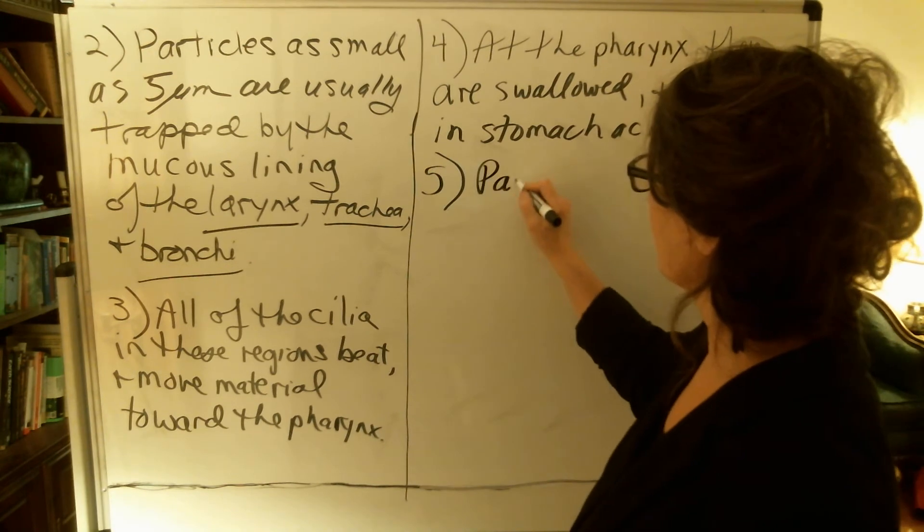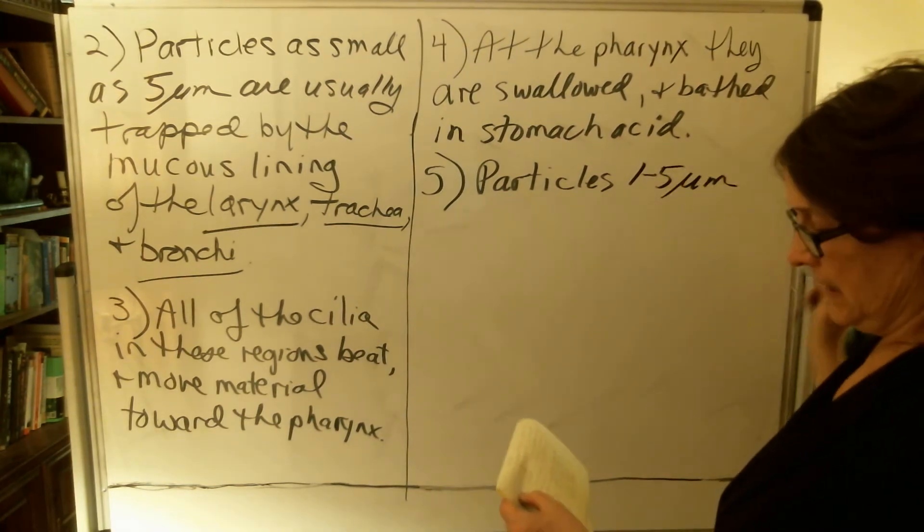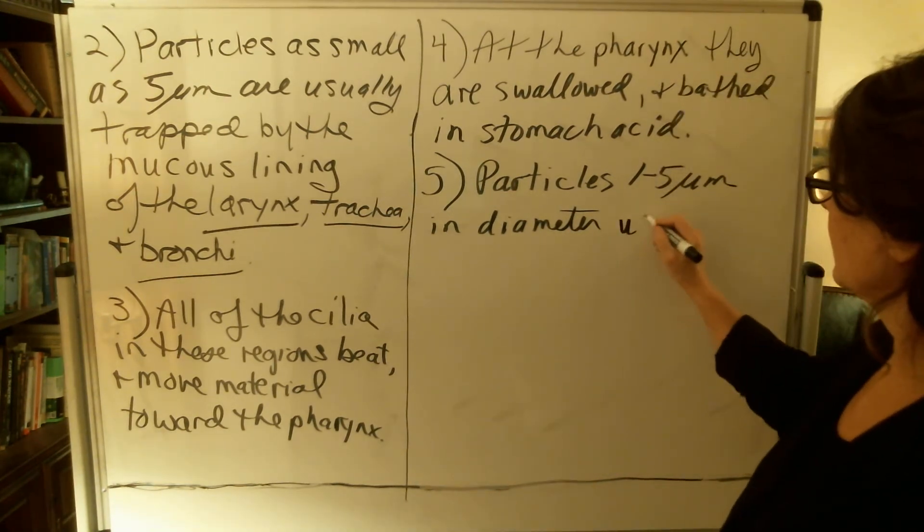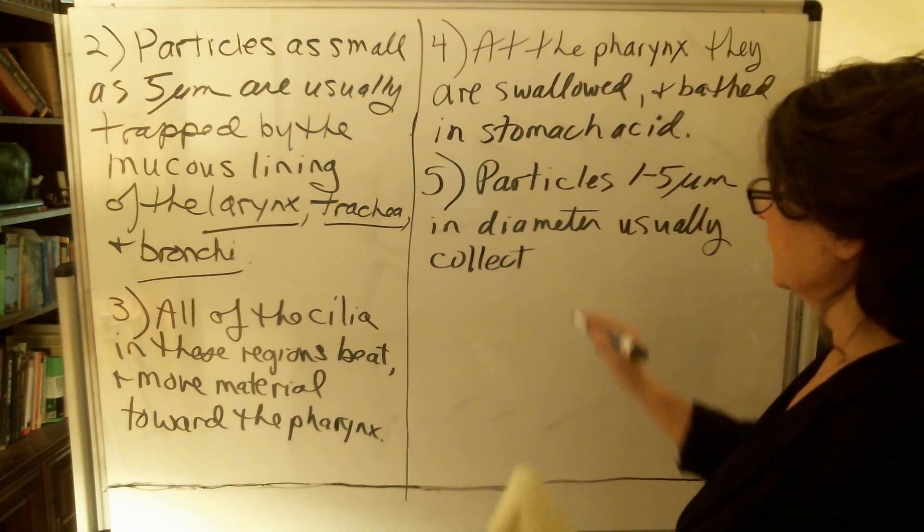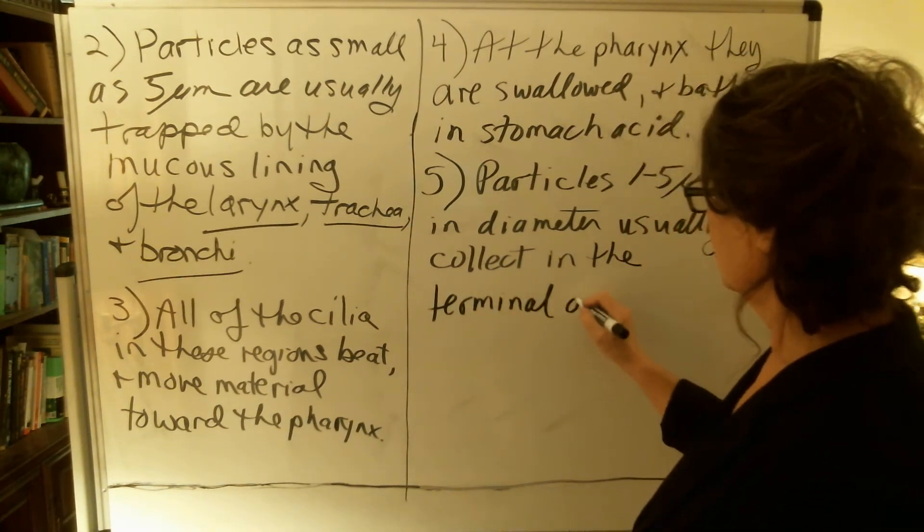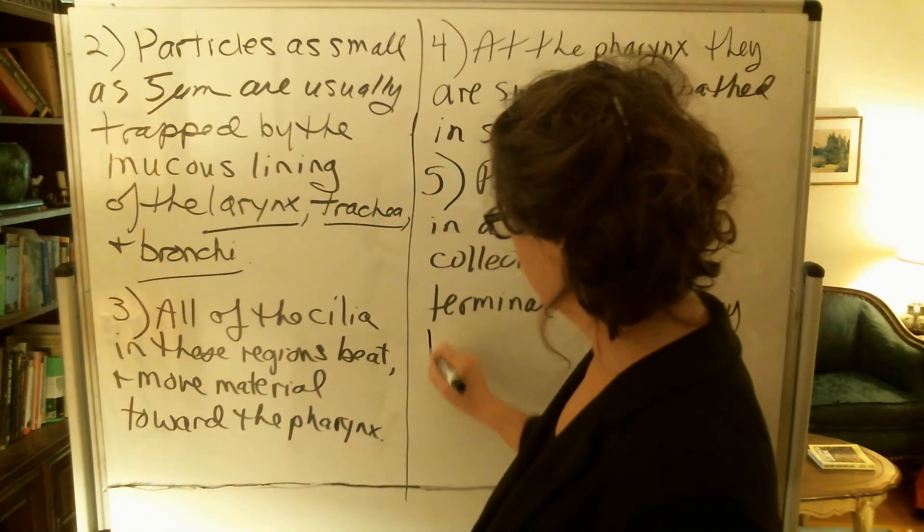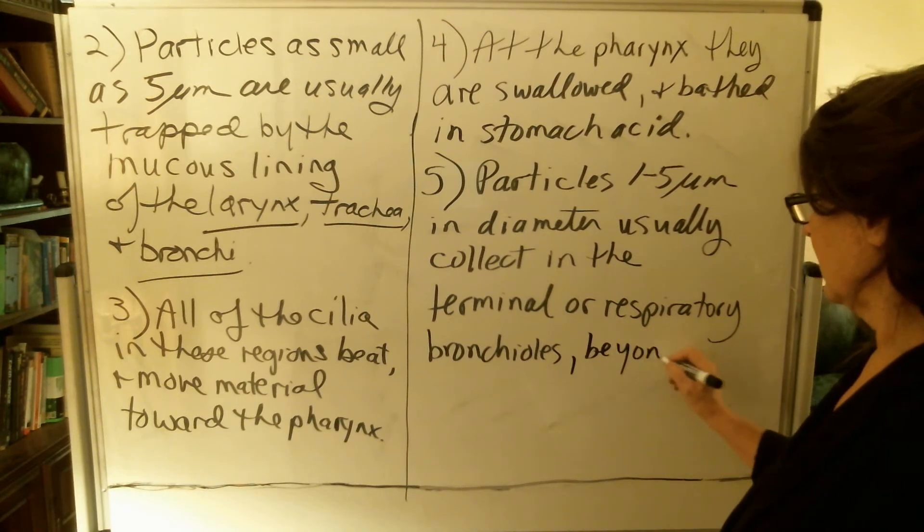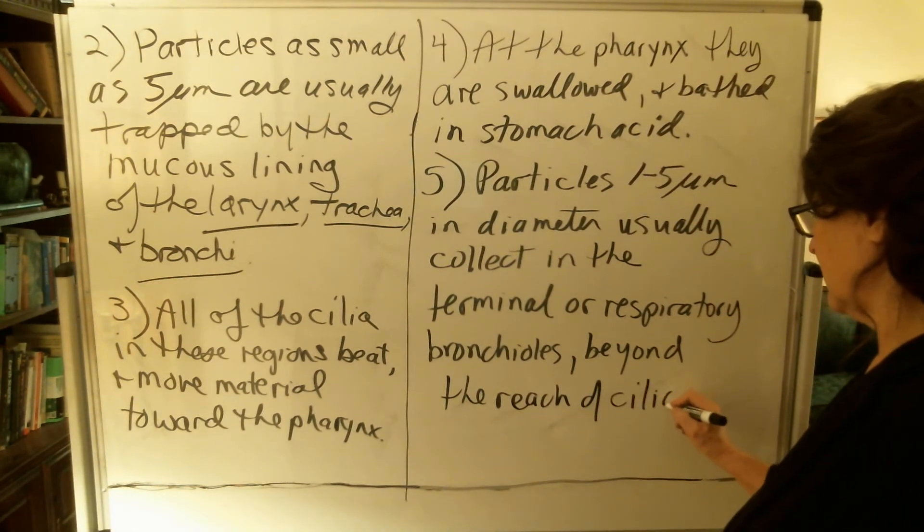Moving down, particles that are 1 to 5 microns in diameter usually collect in the terminal or respiratory bronchioles, which is unfortunately beyond the reach of your cilia.